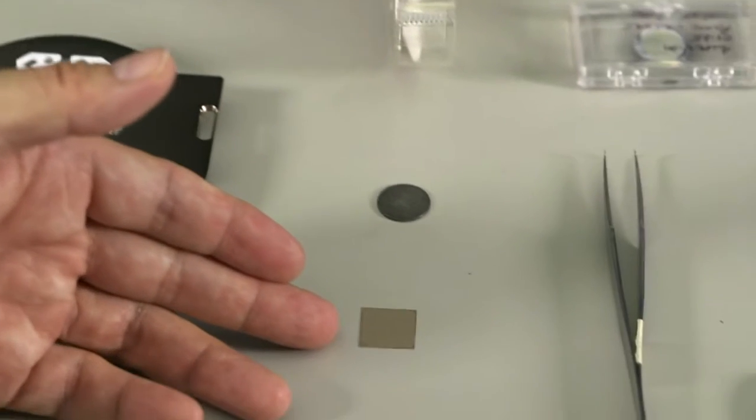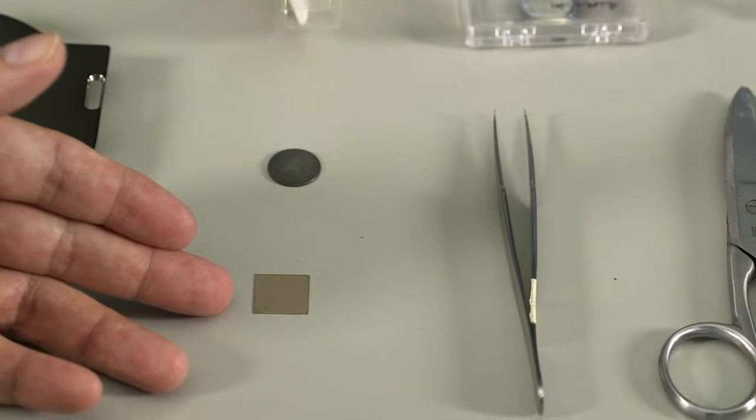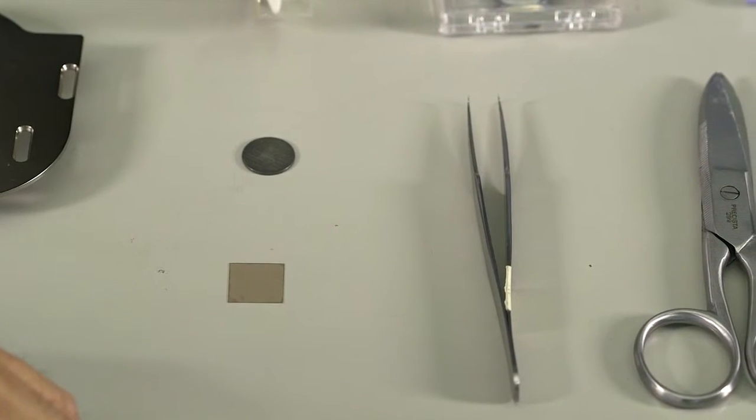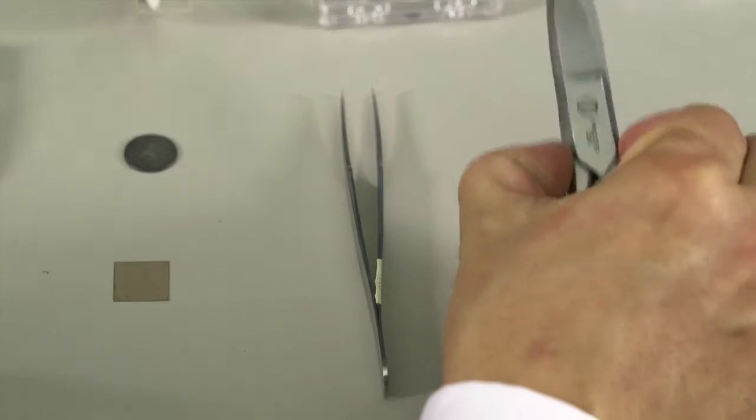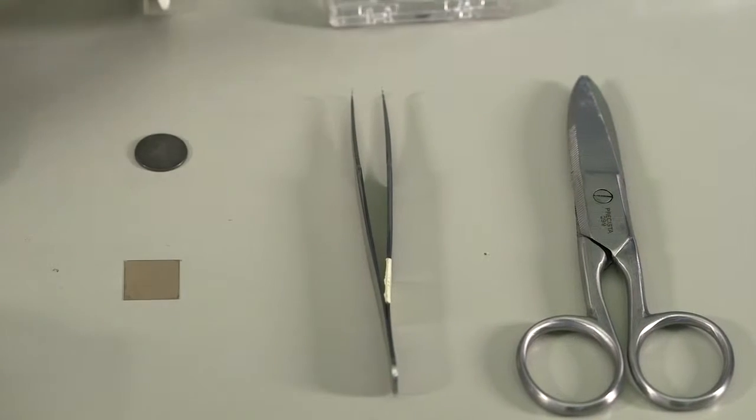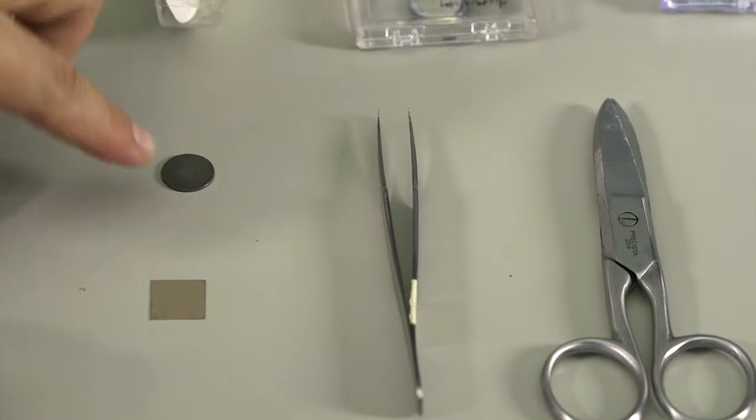This piece of mica is going to be the sample today. We're also going to need a tool, such as a pair of tweezers, a pair of scissors, and we also need double-sided tape and a steel sample dish.